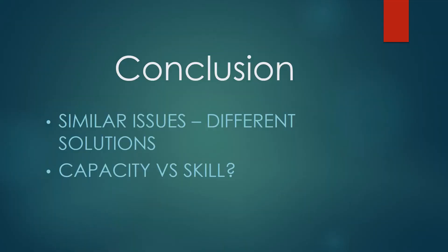In conclusion, I have learned that athletes can present with issues that seem similar, but on closer inspection require further investigation in order to achieve a successful outcome. This sometimes requires the S&C coach to take a different approach to an athlete who may have a capacity issue as opposed to an athlete who has a skill issue.